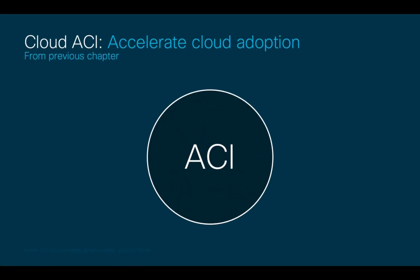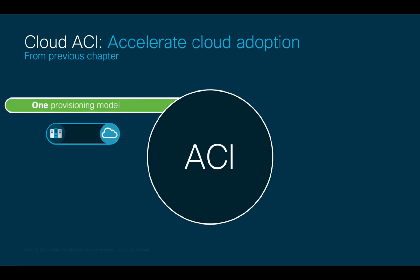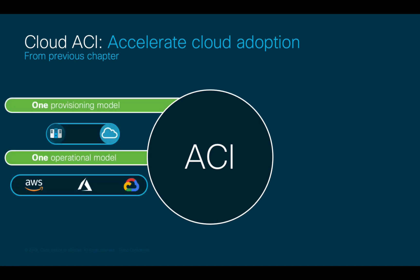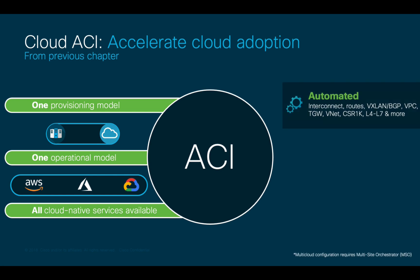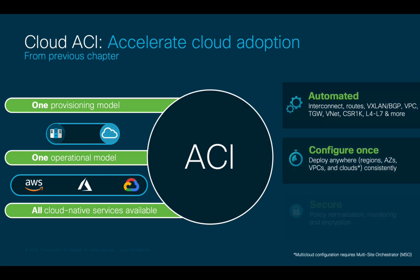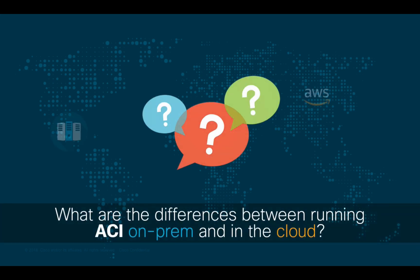As covered in the previous chapter, Cloud ACI can be a great asset to accelerate cloud migrations and hybrid cloud deployments, providing the same configuration, security, and operation model across multiple on-prem and cloud environments. You already know ACI, so I will show you how using the same knowledge you have, you can easily deploy a production-grade cloud network, leveraging automation and enforcing security consistently. But before we get started with step-by-step configurations on each cloud, let's briefly cover how Cloud ACI works by comparing it to the on-premises version.